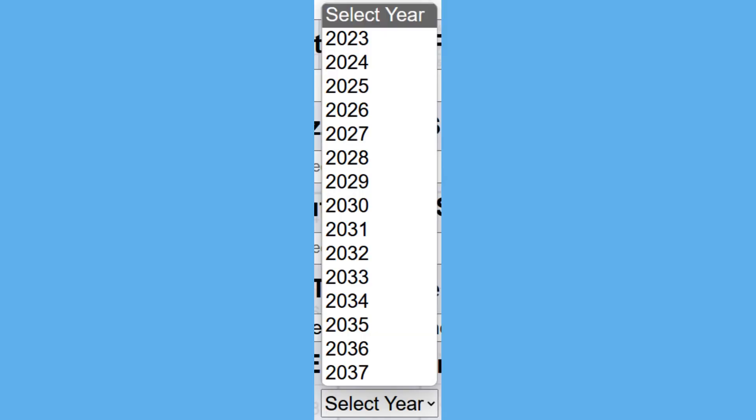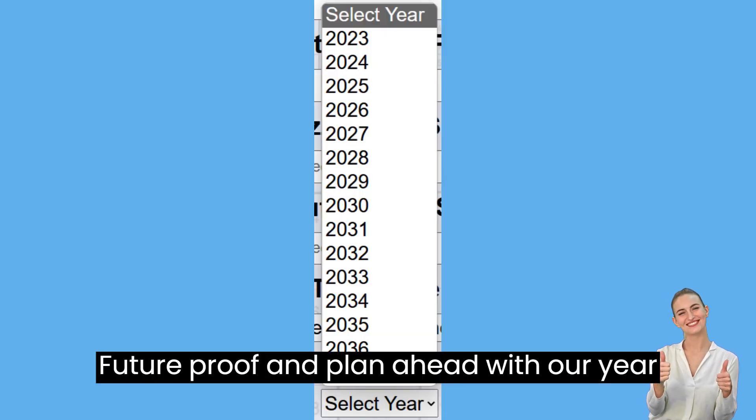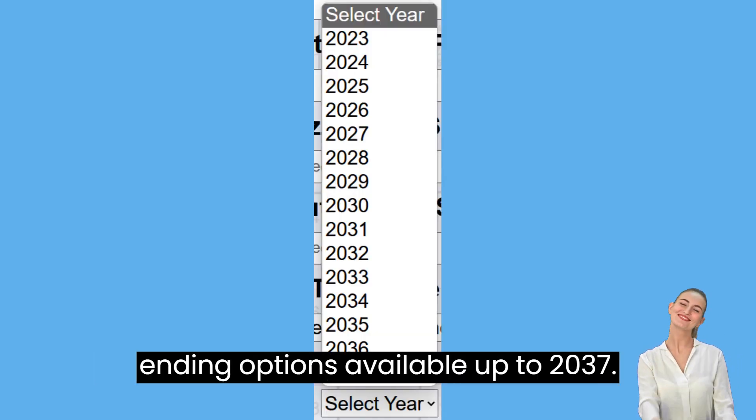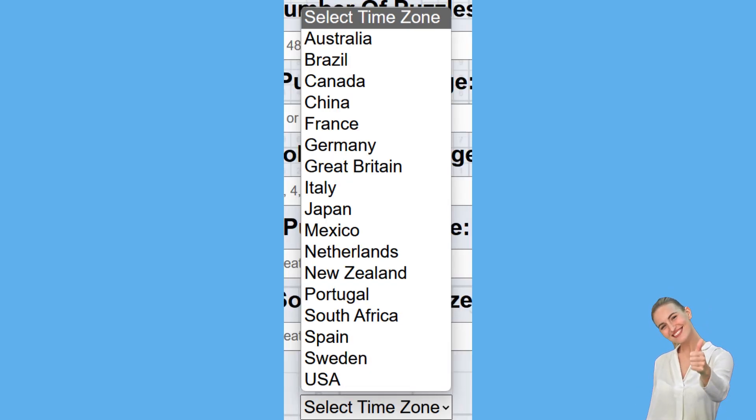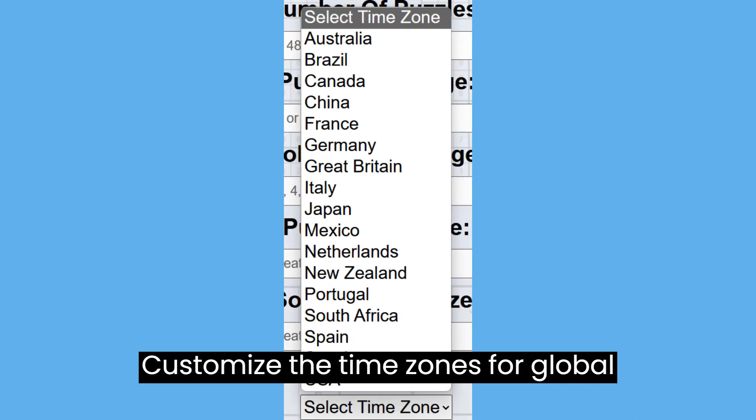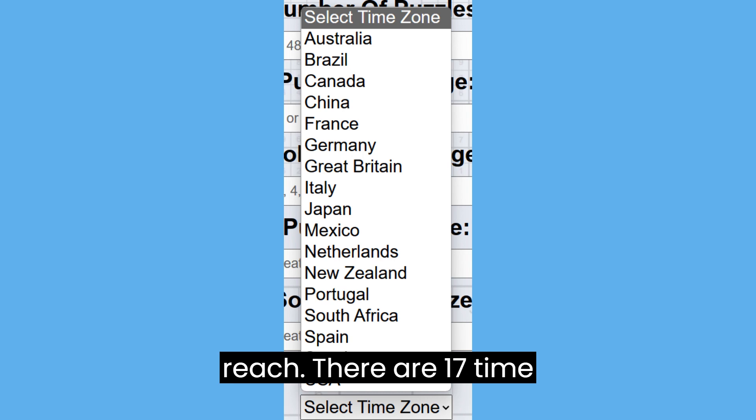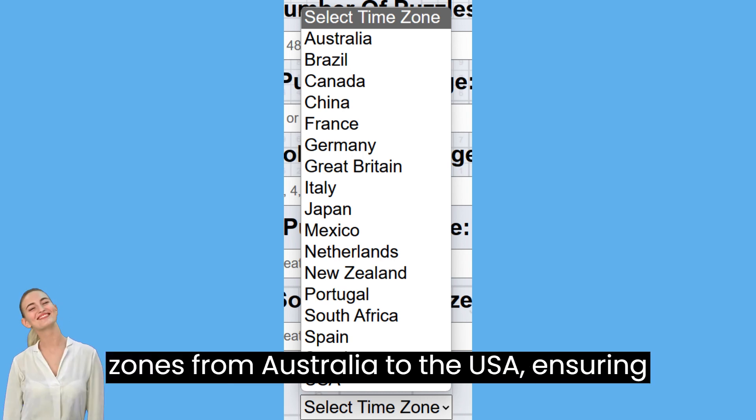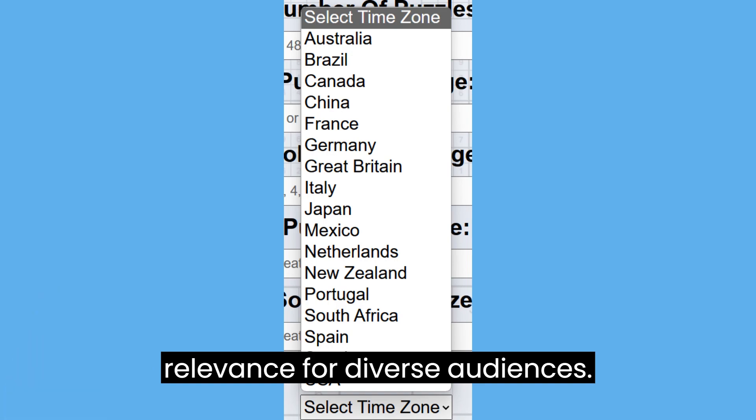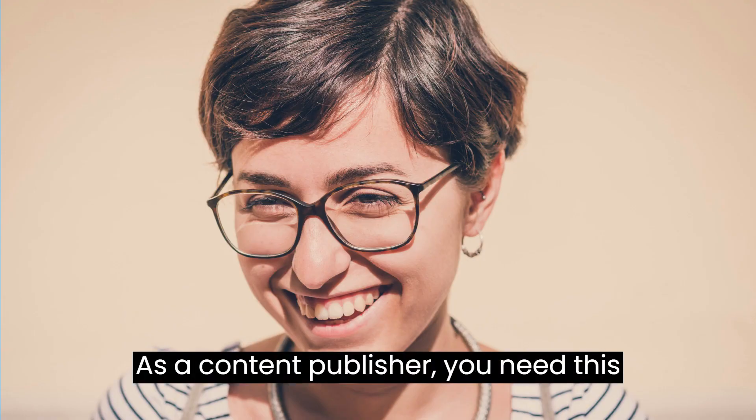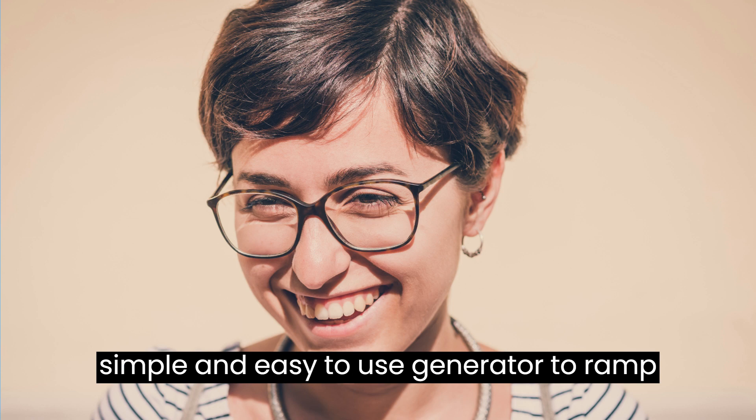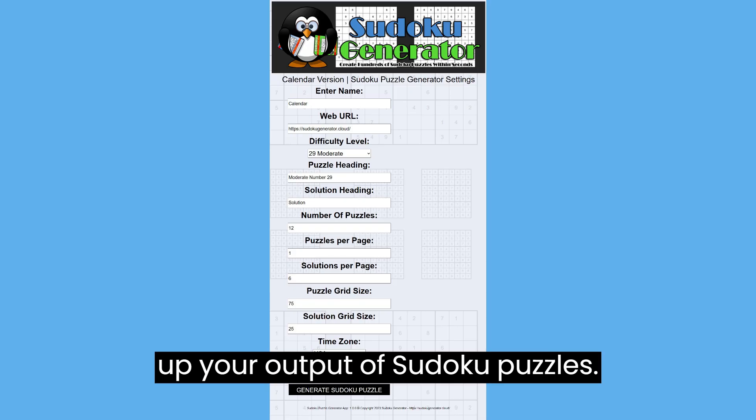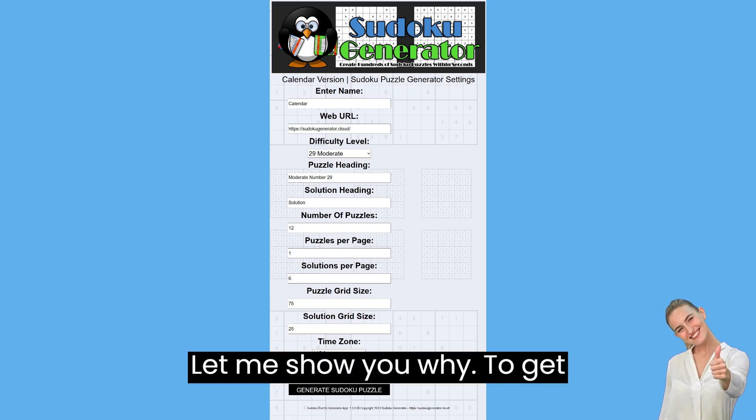Future-proof and plan ahead with our year-ending options available up to 2037. Customize the time zones for global reach - there are 17 time zones from Australia to the USA, ensuring relevance for diverse audiences. As a content publisher, you need this simple and easy-to-use generator to ramp up your output of Sudoku puzzles. Let me show you why.